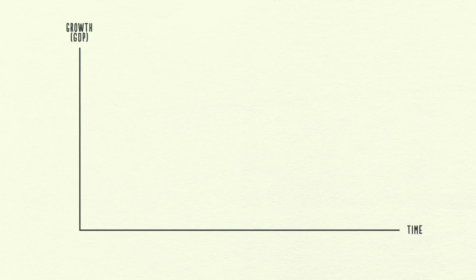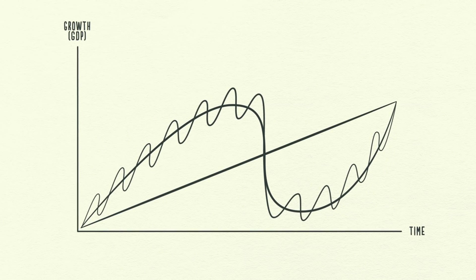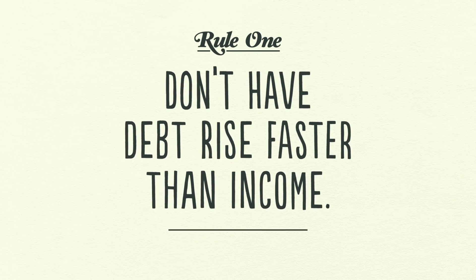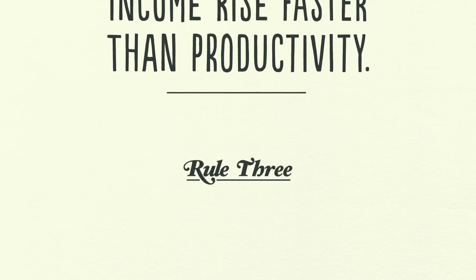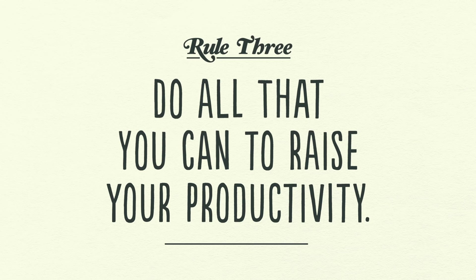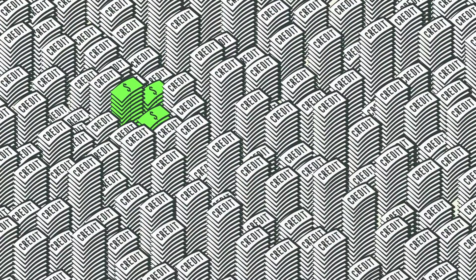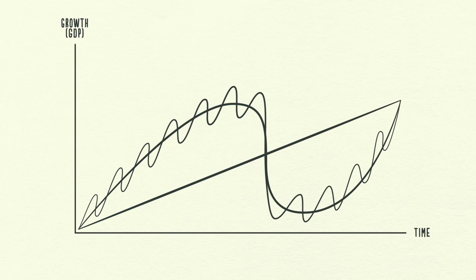Of course, the economy is a little bit more complicated than this template suggests. However, laying the short-term debt cycle on top of the long-term debt cycle and then laying both of them on top of the productivity growth line gives a reasonably good template for seeing where we've been, where we are now, and where we're probably headed. In summary, there are three rules of thumb: First, don't have debt rise faster than income because your debt burdens will eventually crush you. Second, don't have income rise faster than productivity because you'll eventually become uncompetitive. And third, do all that you can to raise your productivity because in the long run, that's what matters most. This is simple advice for you and it's simple advice for policymakers. This template has worked for me and I hope it will work for you. Thank you.